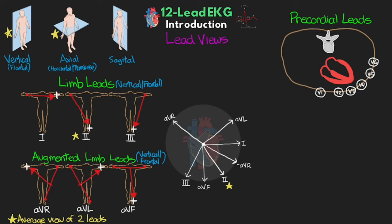Let's talk about our precordial or chest leads — V1 through V6. These six leads look at the heart from the axial or transverse or horizontal plane, giving us a good look at the area of the chest over the heart for a more complete view. Each of these leads is equivalent to measuring from a theoretically calculated reference point called the Wilson Central Terminal, located about in the center of the heart. This is calculated by utilizing the three limb leads — right arm, left arm, and left leg — which combine to make a triangle, with the center of that triangle being the Wilson Central Terminal.